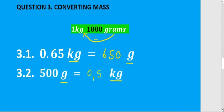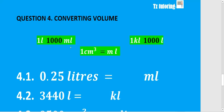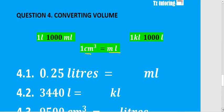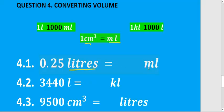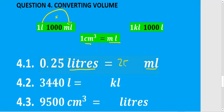Let's move on to question 4: converting volume. One liter has a thousand milliliters, and one kiloliter is a thousand liters. Centimeters cubed is exactly the same as milliliters — they are equal. For 4.1 we want to convert liters to milliliters — going forward, so we multiply by 1000. That gives us 250 milliliters.